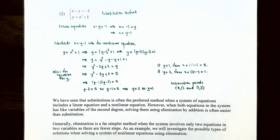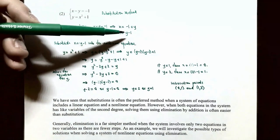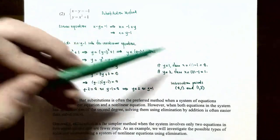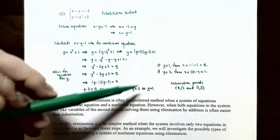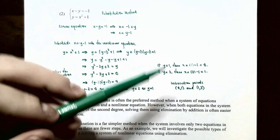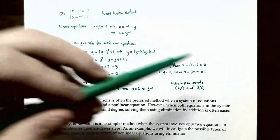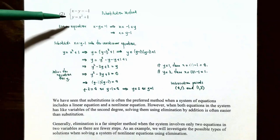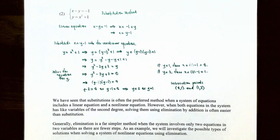The intersection points are (0, 1) and (1, 2). The line x − y = −1 and the parabola y = x² + 1 intersect at these two different points. These are the solutions to the system of non-linear equations.